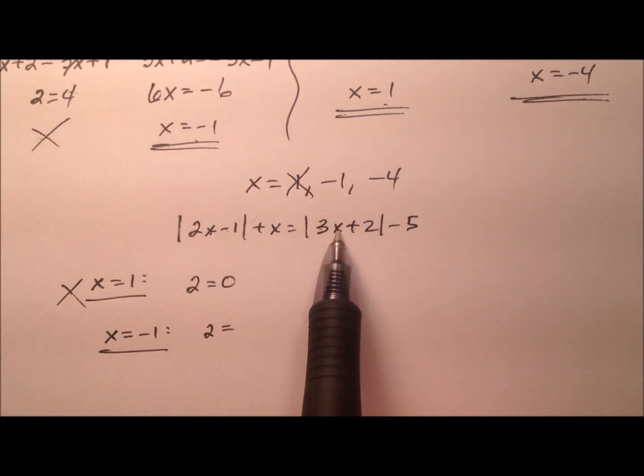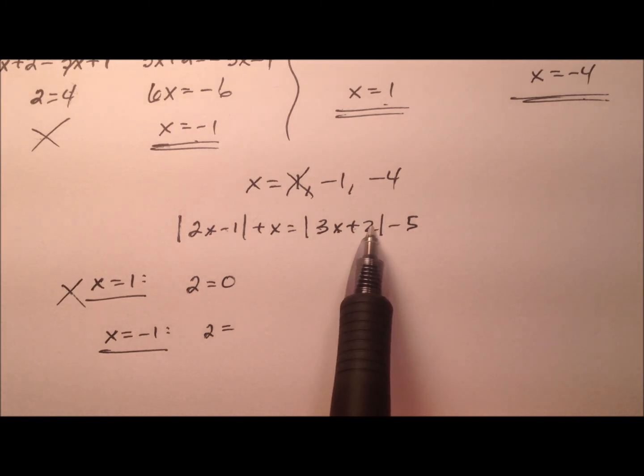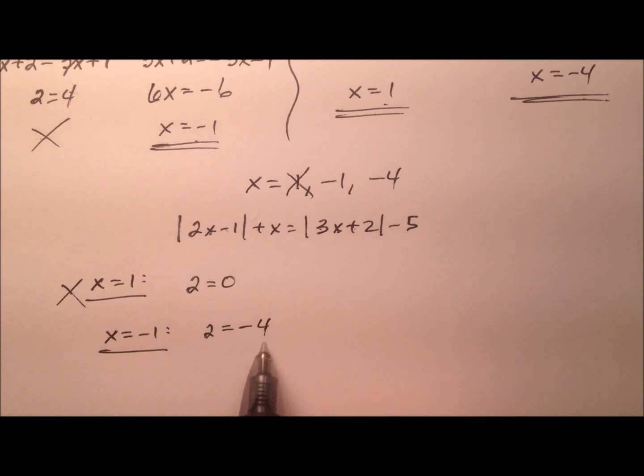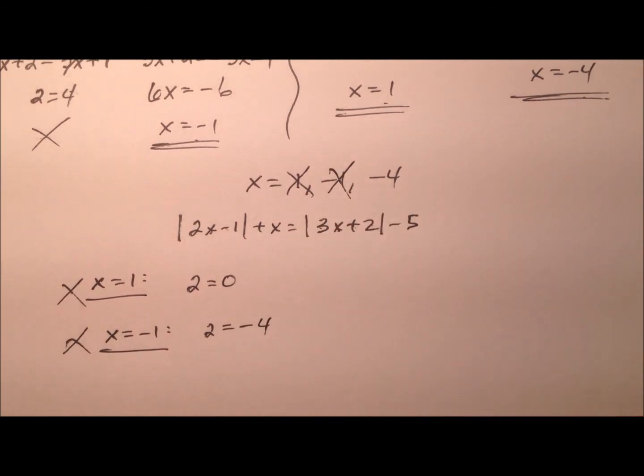And 3 times negative 1 is negative 3. Plus 2 is negative 1. Absolute value is positive 1. Minus 5 is negative 4. So that one's no good either.